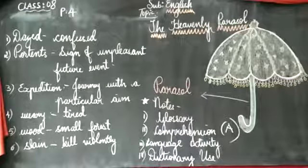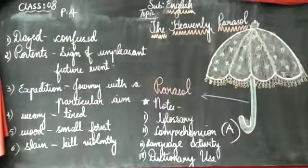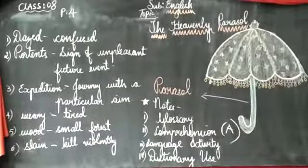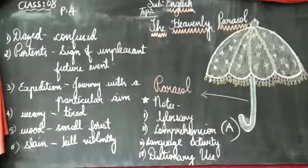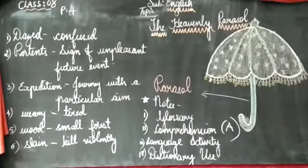And then, come to page number 8. Dictionary use. Under it, you have another question. Question A, choose the appropriate specialist given below in brackets for the following ailments. So, there are specialists given in the brackets. You need to fill up the blanks.